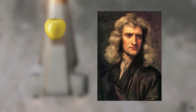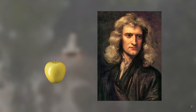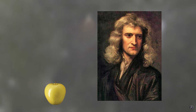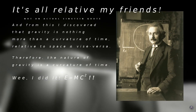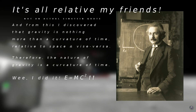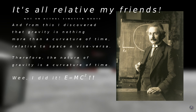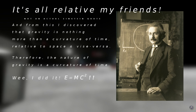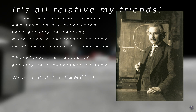Sir Isaac Newton pondered, postulated, and theorized about gravity. Albert Einstein, building upon Galileo's work, provided us with some of the first glimpses into the nature of gravity by discovering that space and time are relative, and from this found that gravity is nothing more than a curvature of time relative to space and vice versa.